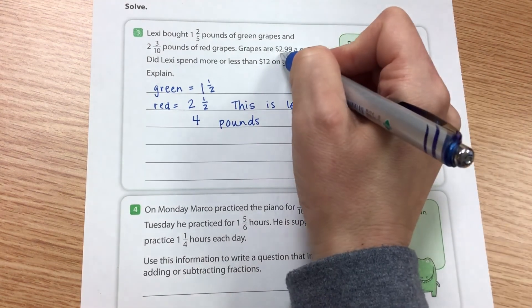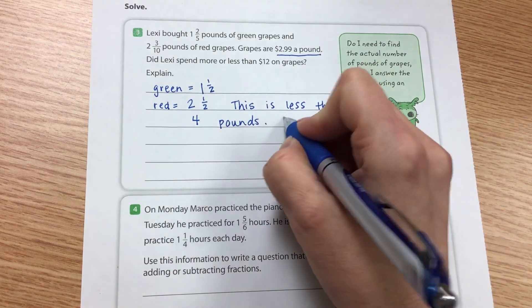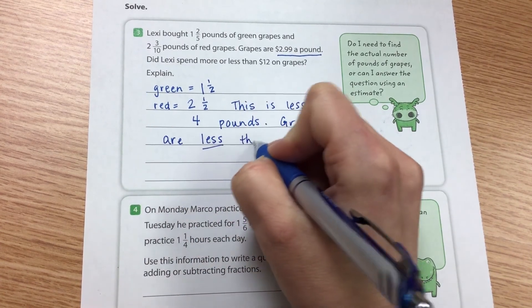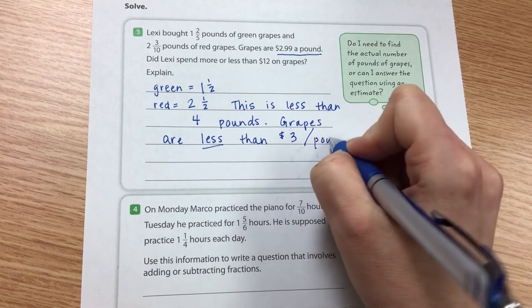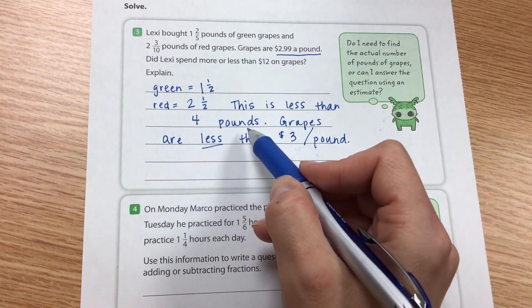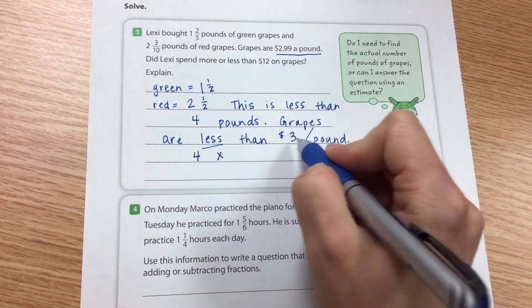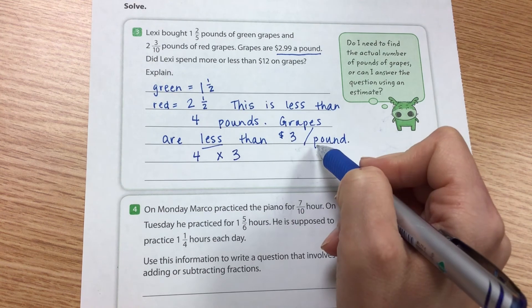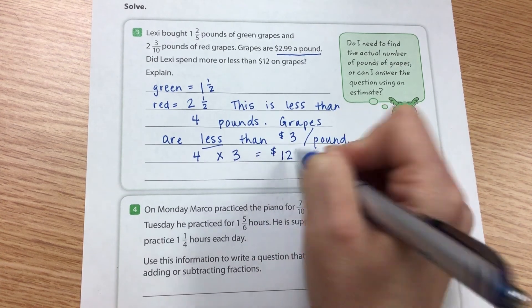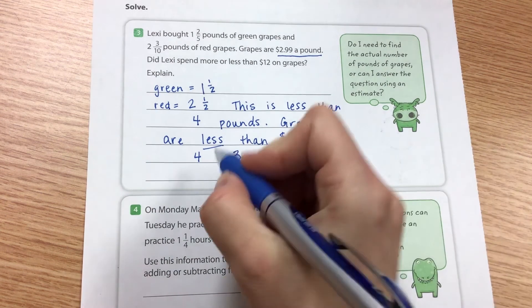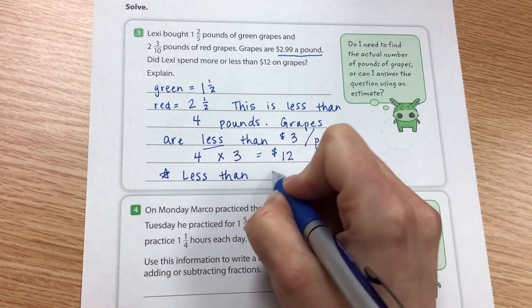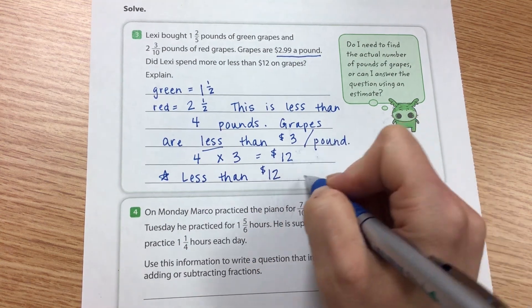And then we know that they are $2.99 a pound. So the grapes are actually less than $3 per pound, a little bit less than that. So we could kind of take, since they're less than $4 a pound, we could take our four times our three, and we know that it's less than $3 a pound and we know that this doesn't really add up to four. And we could say that we know this would be $12, but we know she's going to spend less than $12 because we rounded it up here and we rounded it up here. So the answer is going to be less than $12 for her grapes.